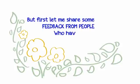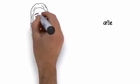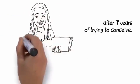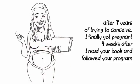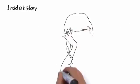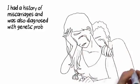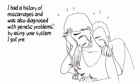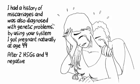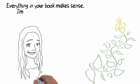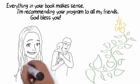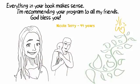Let me share some feedback. Dear Lisa, after seven years of trying to conceive, I finally got pregnant four weeks after I read your book. I had a history of miscarriages and was diagnosed with genetic problems. By using your system, I got pregnant naturally at age 44 after two HSGs and four negative IUIs, including six Clomid induction cycles and laparoscopy. Everything in your book makes sense. Nicole Terry, 44, Melbourne, Australia.